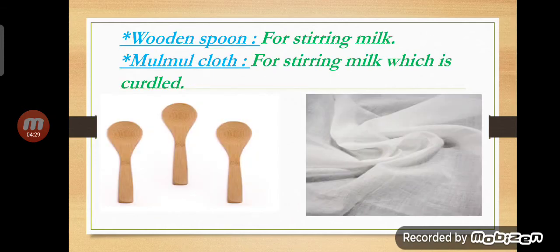The next object is a wooden spoon. It is used for stirring milk. You can see the wooden spoon in the diagram. The next object is mulmul cloth. Mulmul cloth is used for straining milk that has curdled, or for tying curd as well.